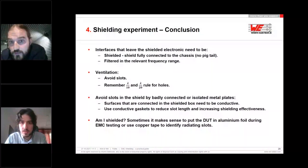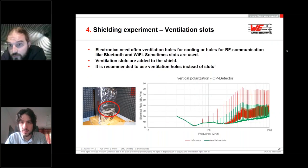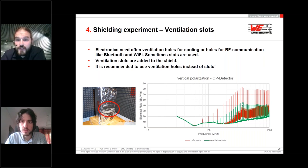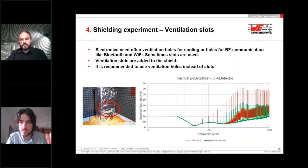Question about slide 28: why is there damping at some high frequencies? This is because of a complex field situation with multiple slot antennas whose waves overlay in the far field, creating maxima and minima depending on measurement position.